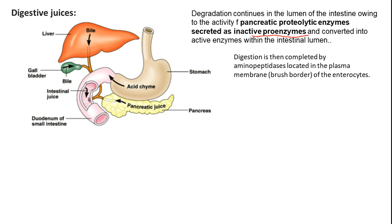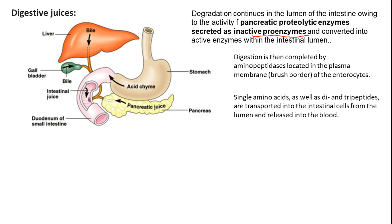Digestion is completed by aminopeptidases located in the plasma membrane brush border of the enterocytes. In the intestinal lumen, proteins are degraded into smaller peptides down to tripeptides. These tripeptides reach the brush border microvilli, where enteropeptidases and aminopeptidases degrade them into dipeptides and monopeptides. Single amino acids as well as di- and tripeptides are then transported across the membrane into cells using an active transporter system.